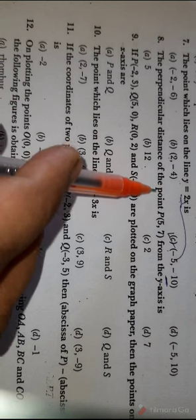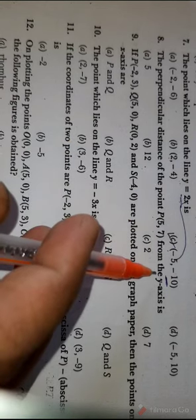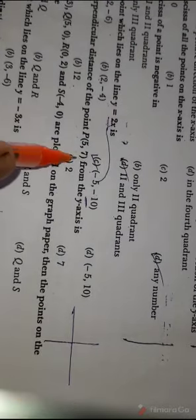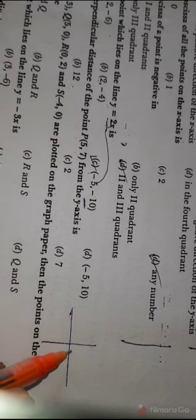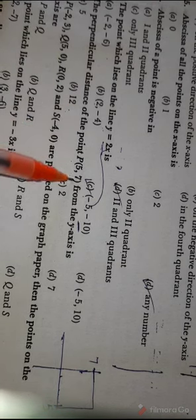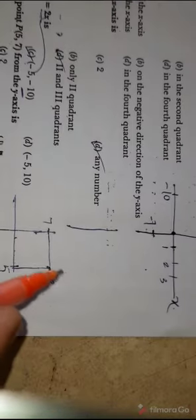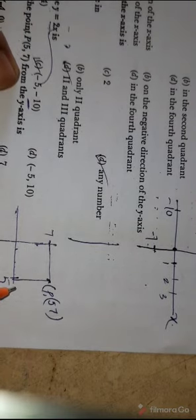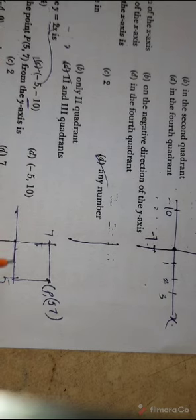Question number 8: the perpendicular distance of the point P(5, 7) from the y-axis. If you see the point (5, 7), both are positive numbers — suppose 5 is here and 7 on the y-axis. They are asking the perpendicular distance of P(5,7) from the y-axis, so the distance is 5 units. So A is the correct answer.